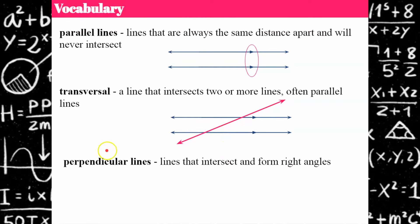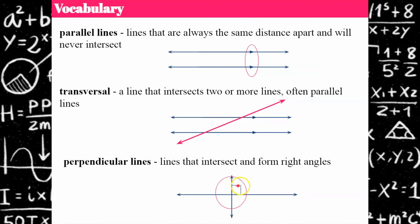Perpendicular lines are lines that intersect to form right angles. Make sure that if you want to use these as right angles that it has the box in it, or it has the measure of 90 degrees inside. If one of them is 90 degrees then all four are 90 degrees.